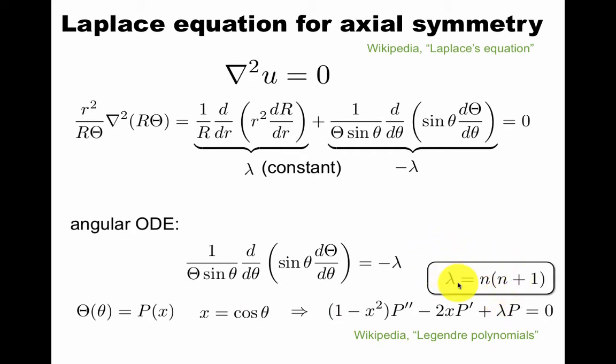This is the Legendre equation. It turns out that to have a solution, lambda should be an integer times an integer plus one. This is explained on this Wikipedia page, but we'll get more into detail.